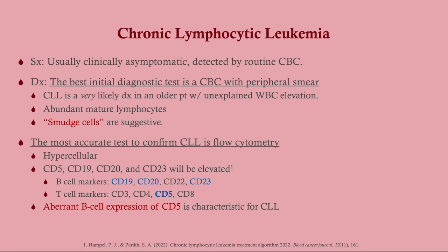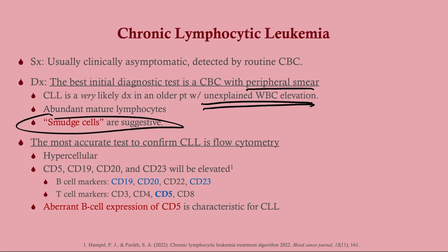If you have an isolated, non-tender, enlarged lymph node, you might do a lymph node biopsy, but the exam will make it clear what you're dealing with. CLL is a very likely diagnosis in a patient with unexplained white cell elevation. On peripheral smear you will see abundant mature lymphocytes — that's super important, make sure you order it. The big finding is smudge cells. If you see smudge cells in a patient with lymphocytosis, that is CLL until proven otherwise.